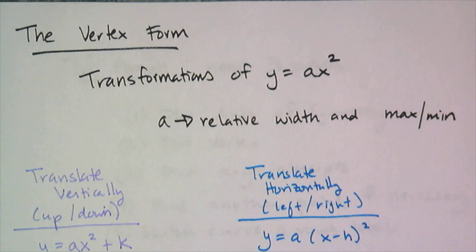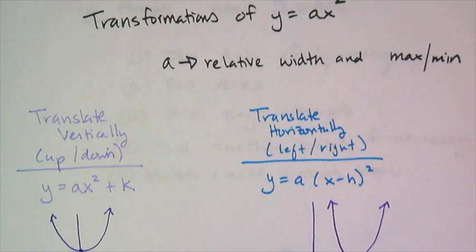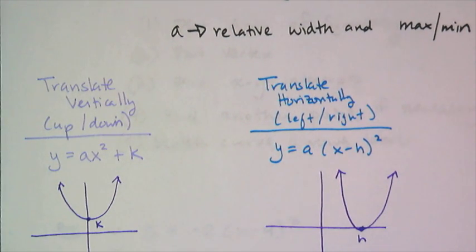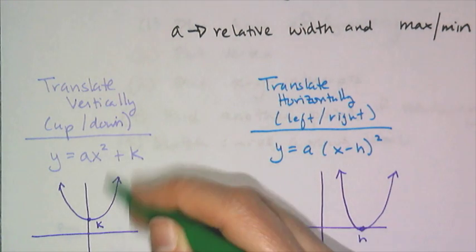Now translating something vertically, which means to move it up or down, I have to remember from the very beginning of the year when we talked about transformations, I have to add something to the end, or subtract something if I want to move it down. And I want to look at what happens to the vertex. So in this case, if I just translate it vertically only, up or down, the vertex is now located at (0, k).